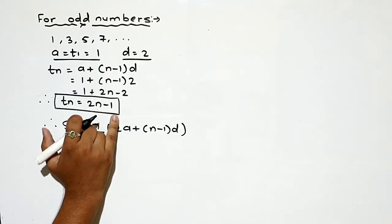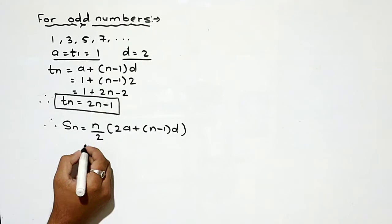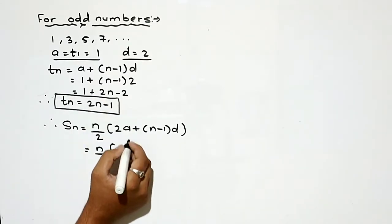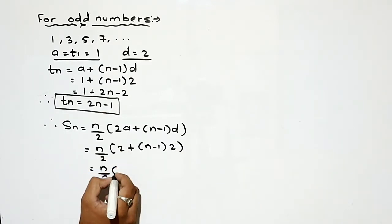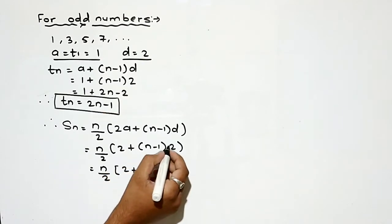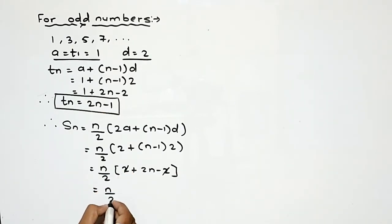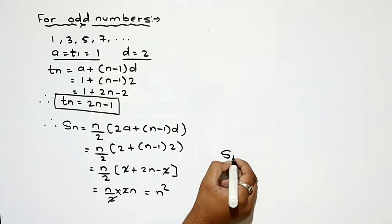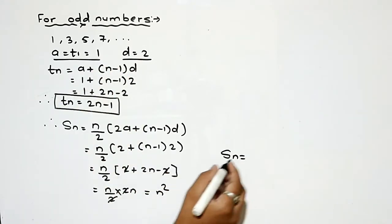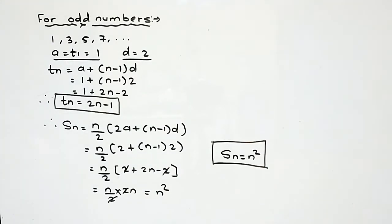For the sum of odd numbers: Sn = n/2 × [2a + (n-1)d] = n/2 × [2 + (n-1)×2] = n/2 × 2n = n². So the formula for sum of n odd numbers is Sn = n². Note: tn = 2n−1 and Sn = n².